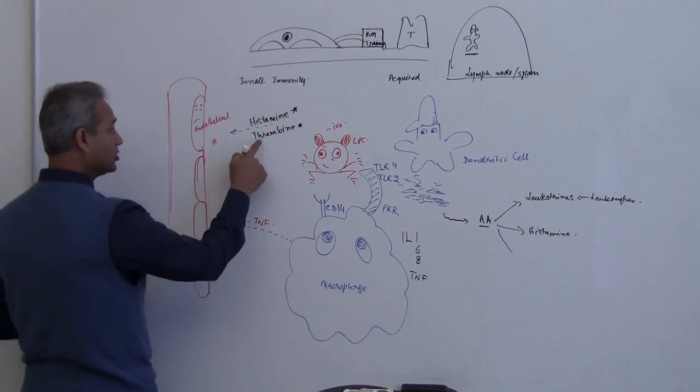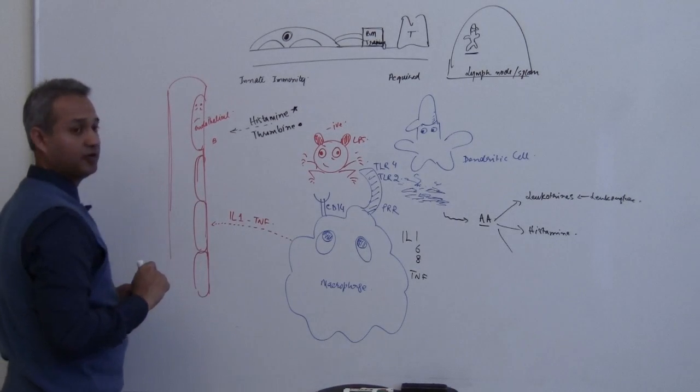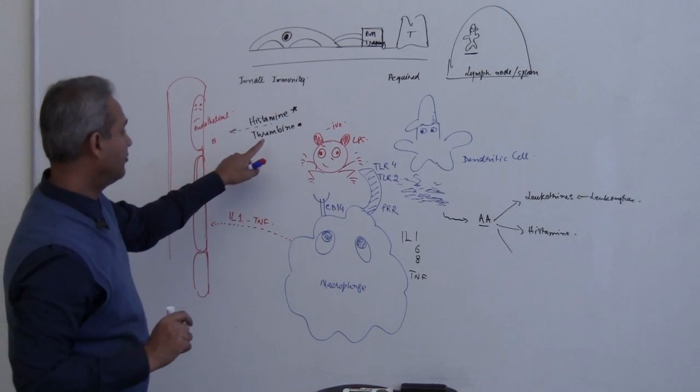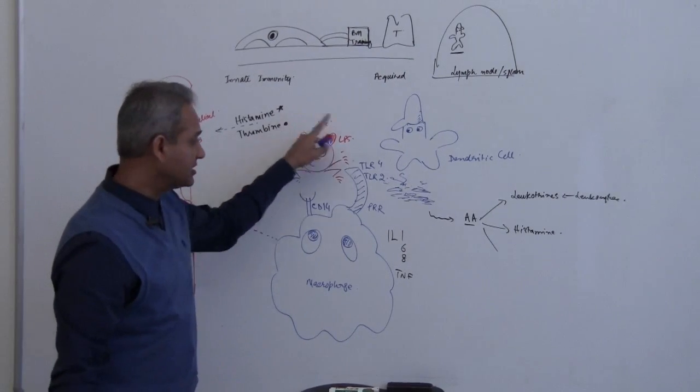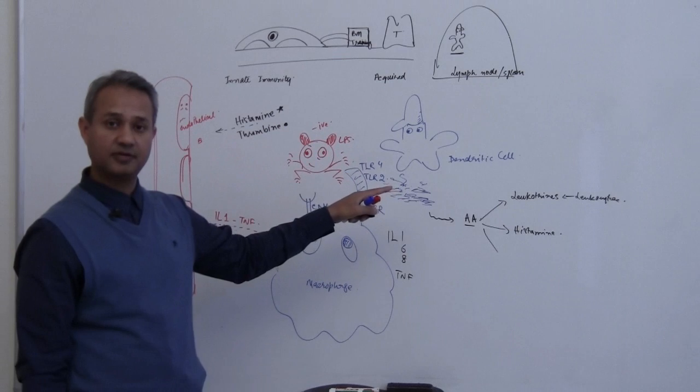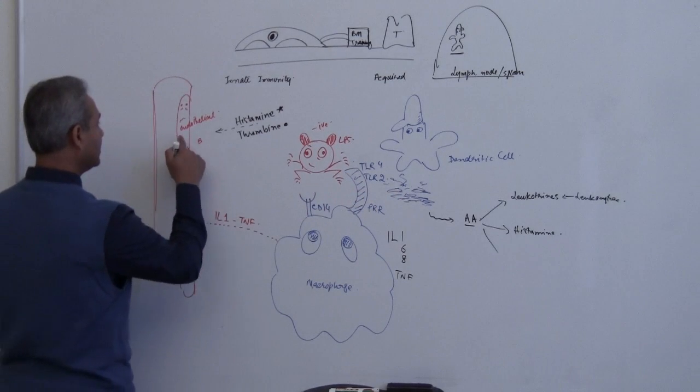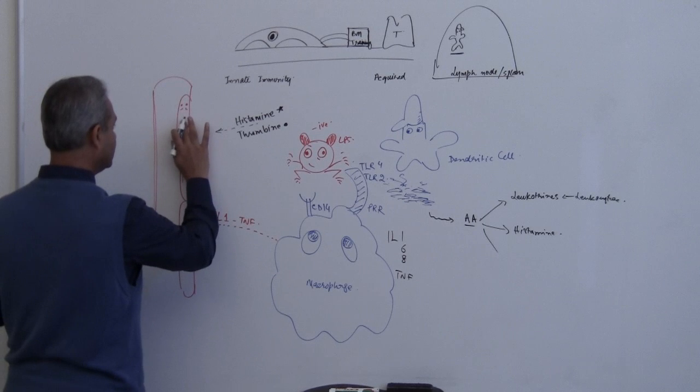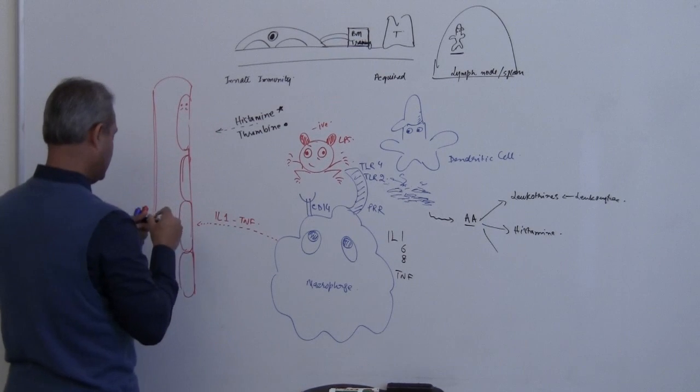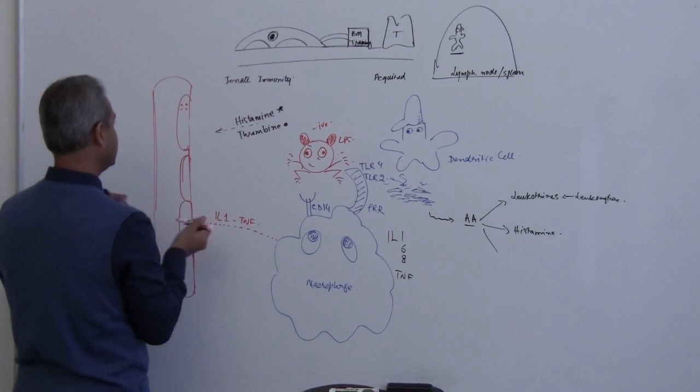When these things work here on the endothelium, what happens? So start from here. Tissue breakdown products are released from the defense cells present in this area. Histamine and thrombin, when they come to this cell, let's quickly check what happens.